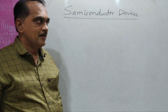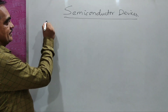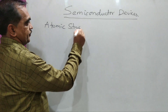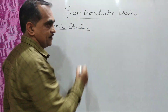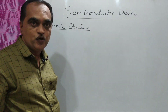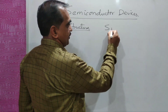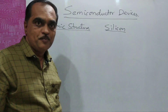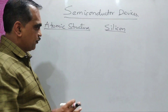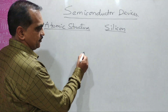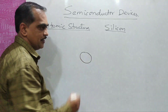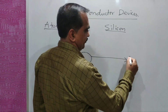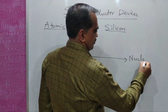If you see an atom and its atomic structure, take the example of silicon — a very important semiconductor material. If you see the atomic structure of silicon, the central part in an atomic structure is called the nucleus.